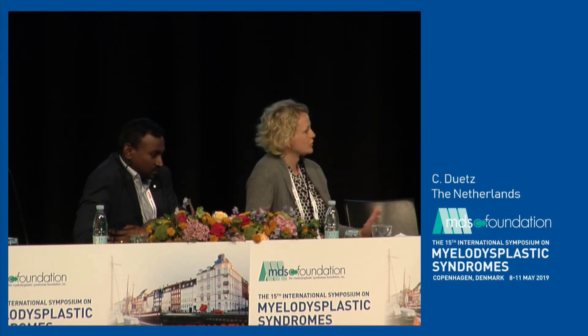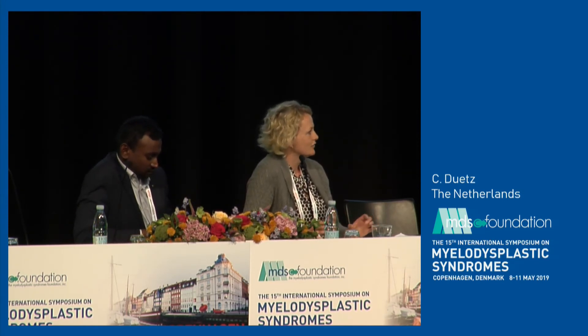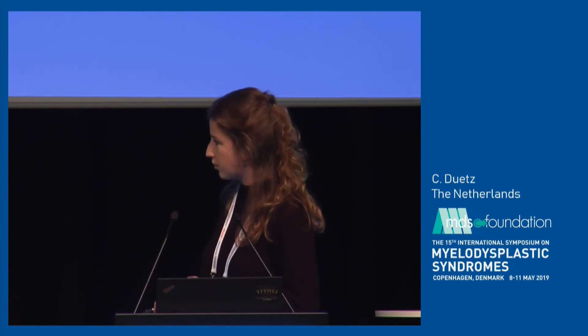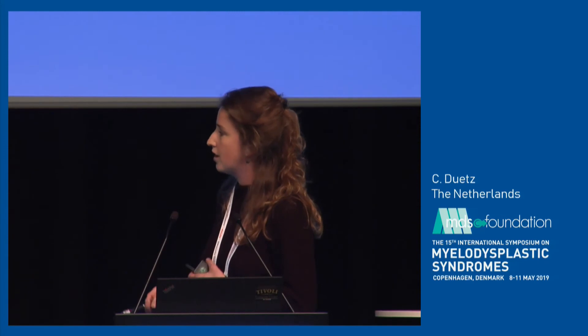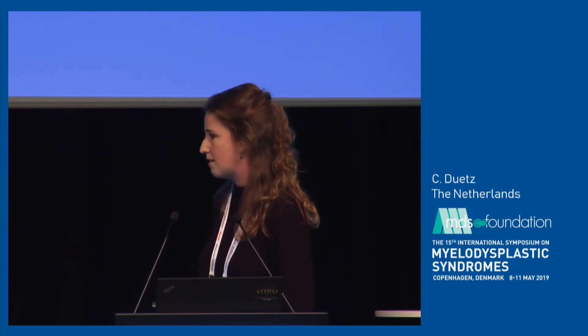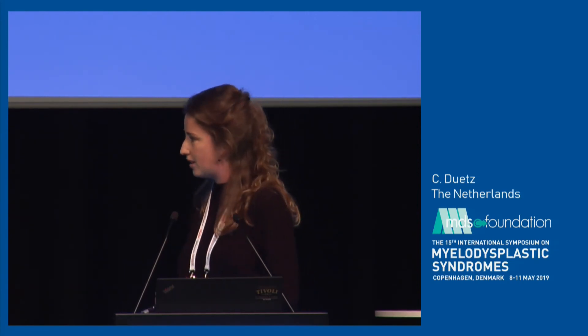Thank you for a very nice talk. A question from the audience: when you reduce from six tubes to one tube, would certain subgroups of MDS be identified with less accuracy? We did look into that — we discriminated between single lineage, multi-lineage, ring sideroblasts versus no ring sideroblasts, and cytogenetic aberrancies versus no cytogenetic aberrancies. The changes in accuracy were very limited within those small subgroups.